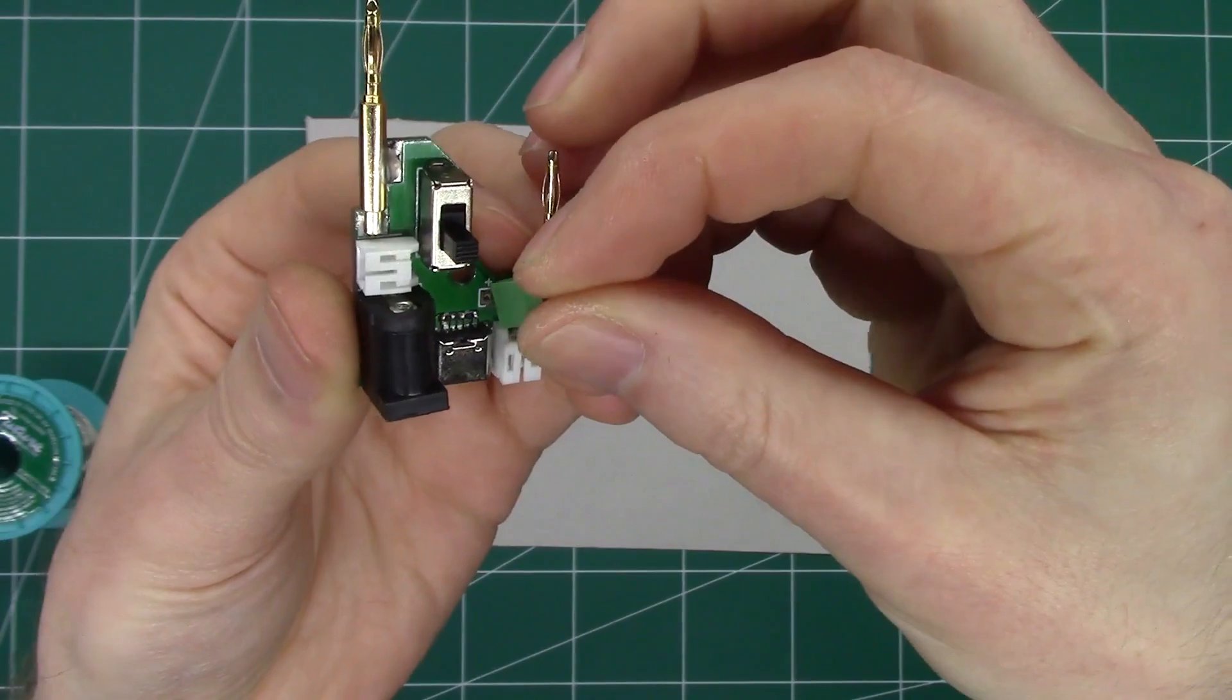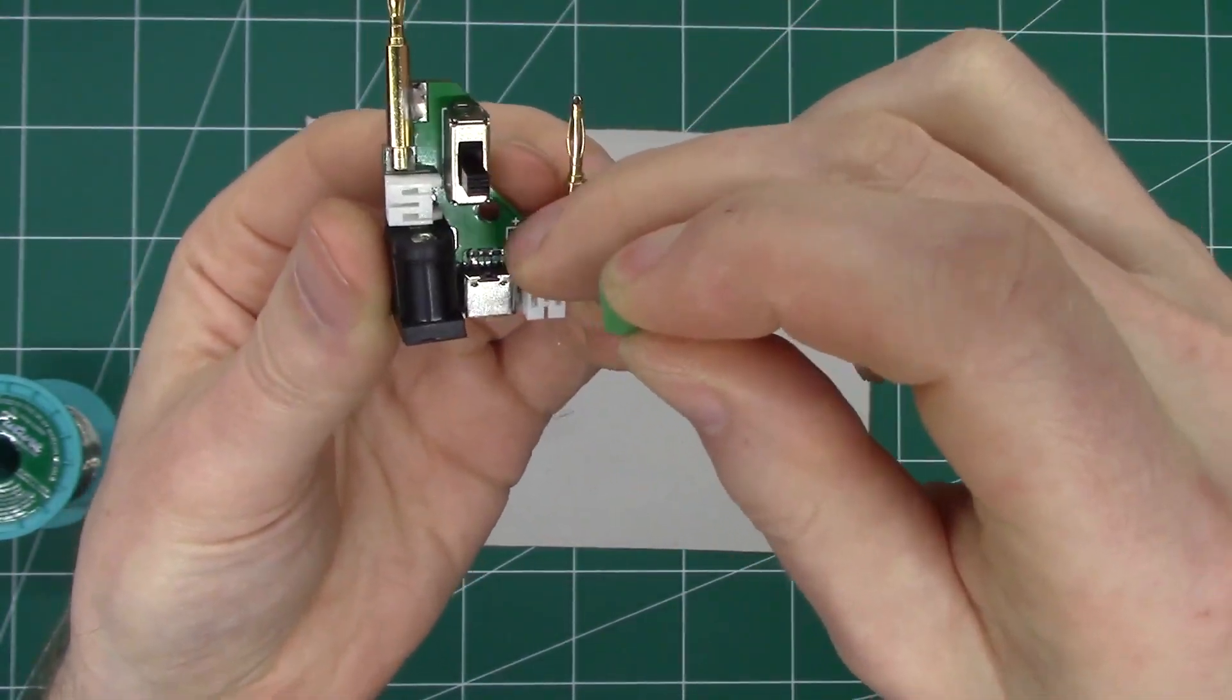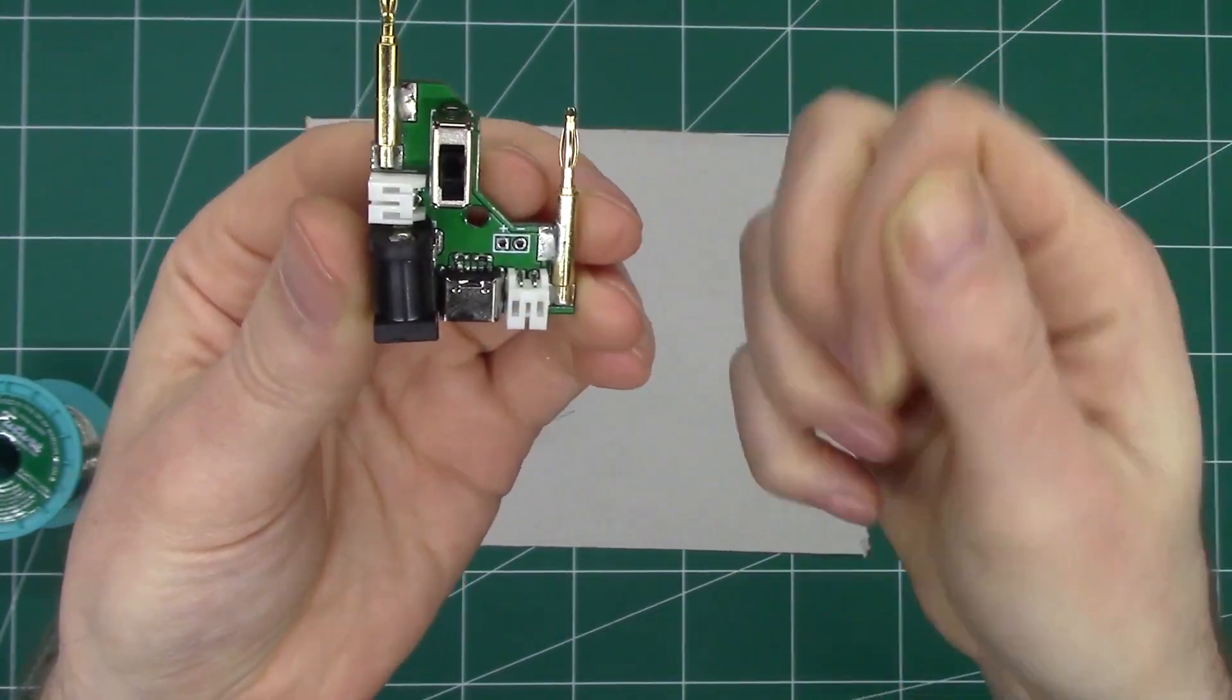We have spacing for screw terminals, which are not included in the kit, or you could just solder in wires to these two points here.